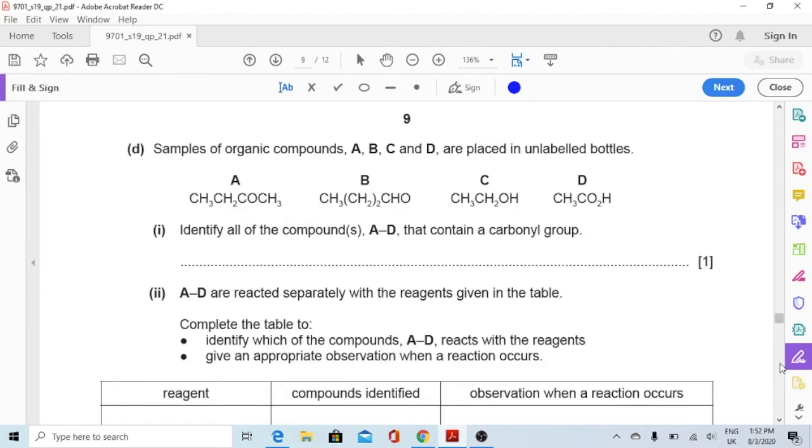Now moving on to part D. Samples of organic compounds A, B, C, and D are placed in unlabeled bottles. A has CO, which means that's a ketone group. B is CHO, that's an aldehyde group. Before you proceed, I think it's better if you give them their names or at least classify them to what groups they belong. This is an alcohol, and this is a carboxylic acid.